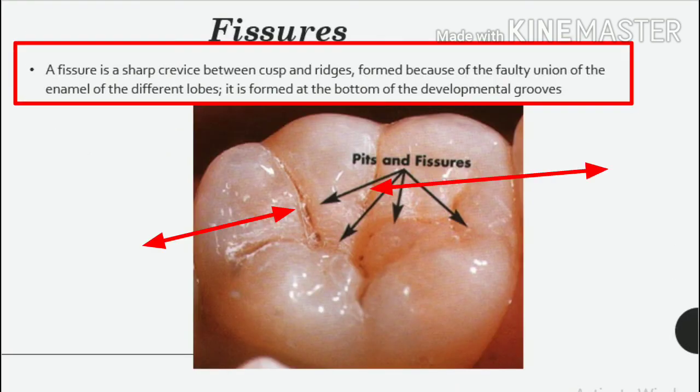Fissures. A fissure is a sharp crevice between cusps and ridges, formed because of the faulty union of the enamel of the different lobes. It is formed at the bottom of the developmental grooves.